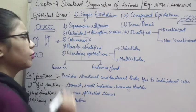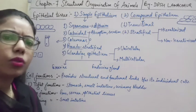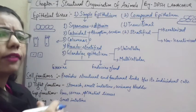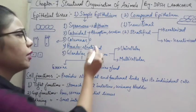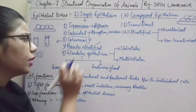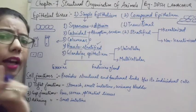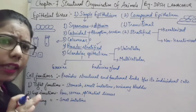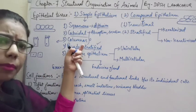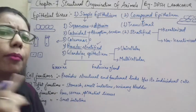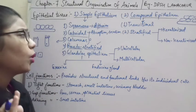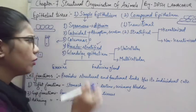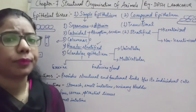The fourth type is pseudo-stratified epithelium. 'Pseudo' means false and 'stratified' means layers. So pseudo-stratified epithelium resembles tissue with different layers of cells, but it actually has only one layer of cells — the layers are not true.